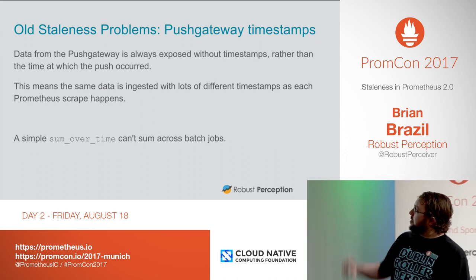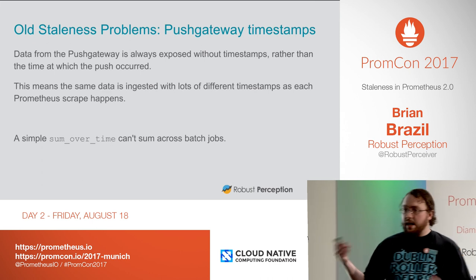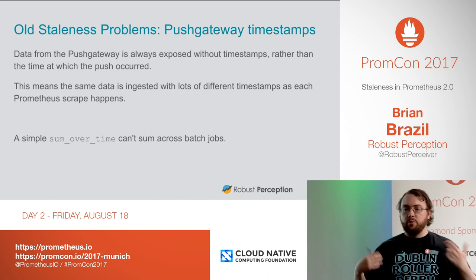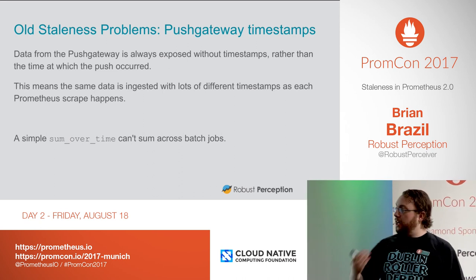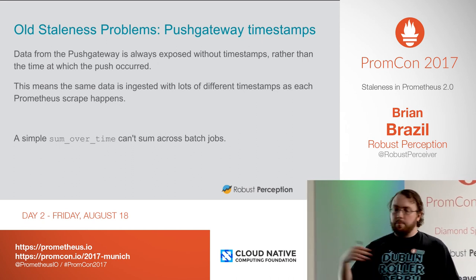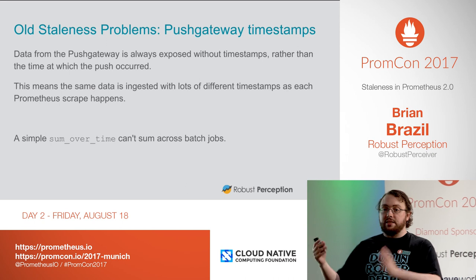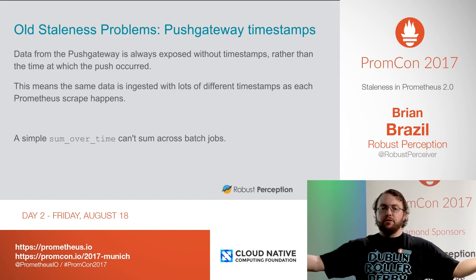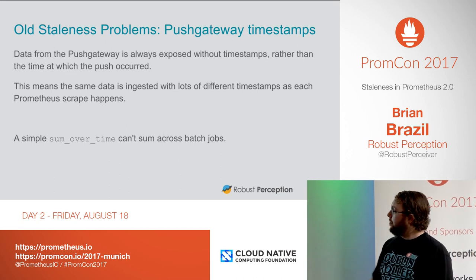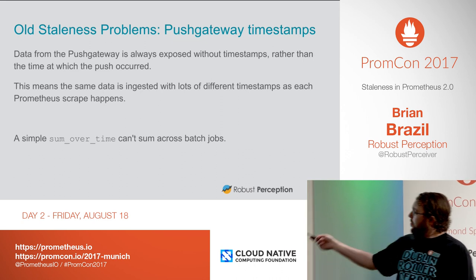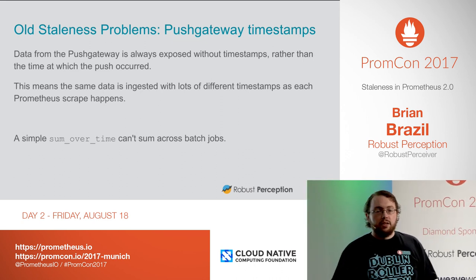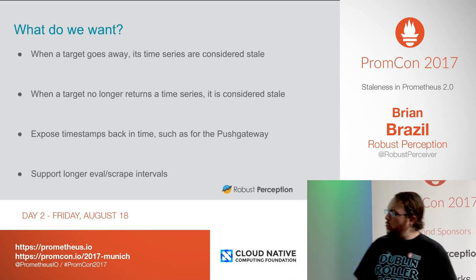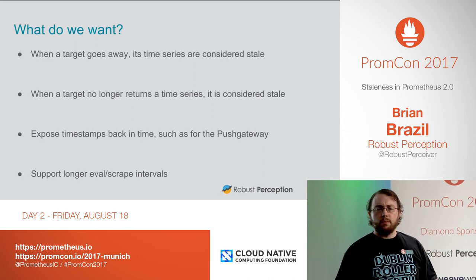Another issue is the push gateway and timestamps. Because the push gateway exposes data always as now — whatever now is when the scrape happens — rather than the time that the push occurred. It would be handy if that data could appear with the timestamp of when the push occurred, so we could see how recent it was and do analysis on it. Instead, we get the same data multiple times and have to somehow tell that these are from different pushes. This isn't great, this causes problems — let's do better.